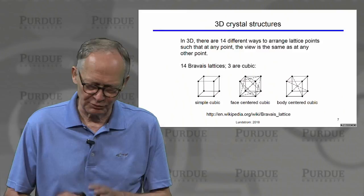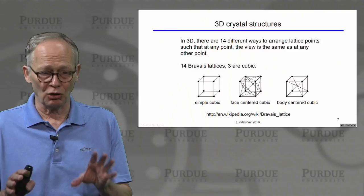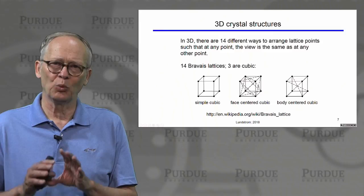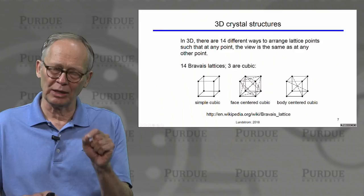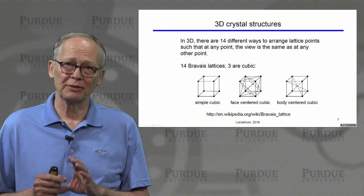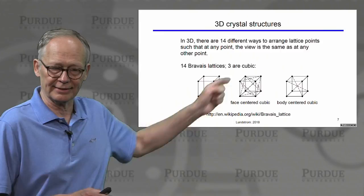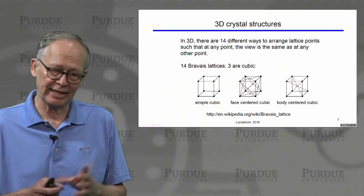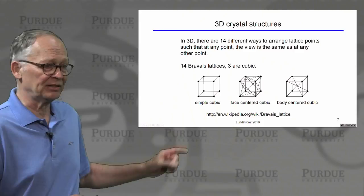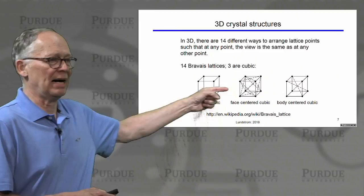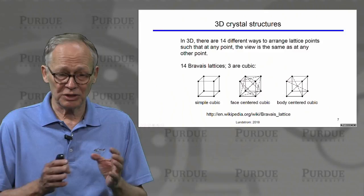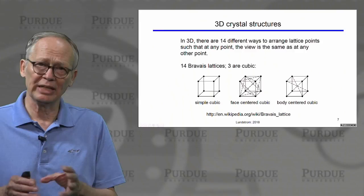The whole structure of crystallography is a rich subject. It turns out that in three dimensions, if you ask how many ways there are to arrange a set of points such that the environment looks identical from any point, there are only 14 different ways. These are called the 14 Bravais lattices. Three of them are cubic lattices: a simple cube with atoms at each of the eight corners, a face-centered cubic which additionally has an atom at each of the six faces, and a body-centered cubic with an atom in the middle of the cube.